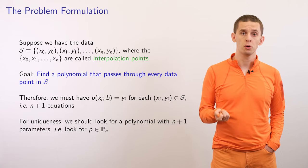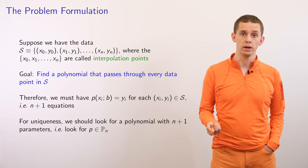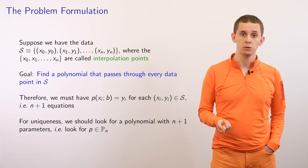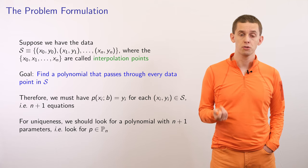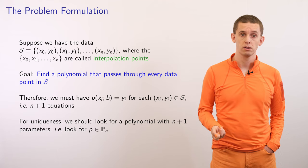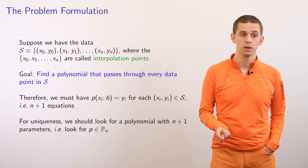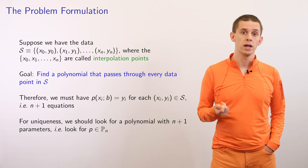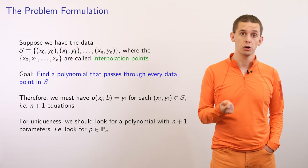Suppose we're given n plus 1 data points as pairs of numbers: x0, y0, x1, y1, up to xn, yn, forming a set of values s. We call the x values the interpolation points. Our goal is to find a polynomial that passes through all of these n plus 1 values, so for every xi, the polynomial evaluated at xi gives the corresponding value of yi. This gives us n plus 1 equations, and so we should choose polynomials that have n plus 1 unknowns, which equals polynomials of degree n.